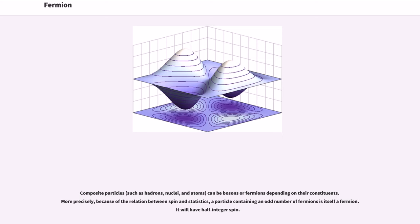Composite particles, such as hadrons, nuclei, and atoms, can be bosons or fermions depending on their constituents. More precisely, because of the relation between spin and statistics, a particle containing an odd number of fermions is itself a fermion. It will have half-integer spin.